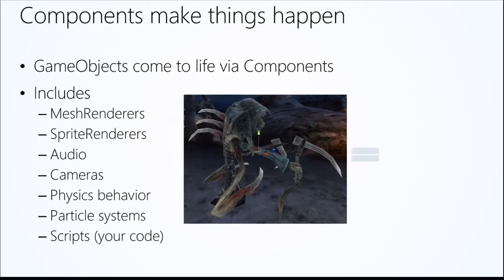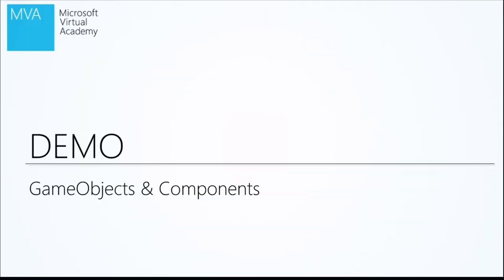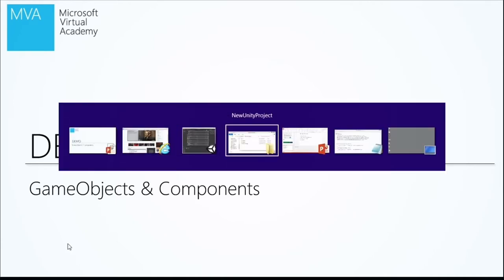Let's look at what a game object is and how components work. We'll create a new scene — remember, we can have many scenes in a project. Scenes are the equivalent of levels; some folks put multiple levels in one scene, but I typically break them apart: title screen is one scene, level one is a scene, level two is a scene.